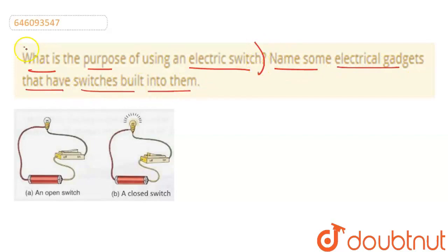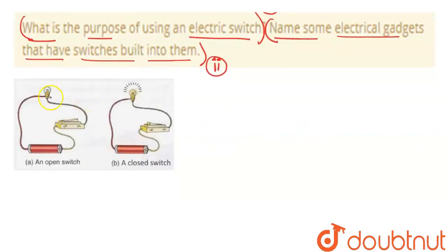First, let's answer the first part. We are asking about the purpose of using an electric switch. Let's see. Basically, this is our diagram which shows a cell connected to a bulb with a switch. Here you can see there is an off option and an on option. Basically, what does this switch do?